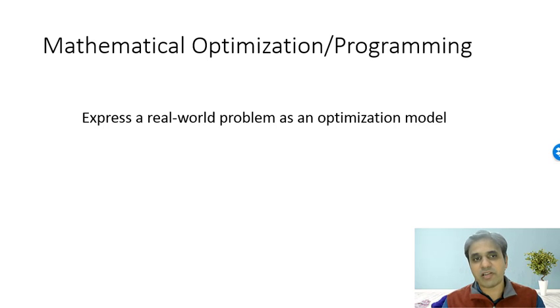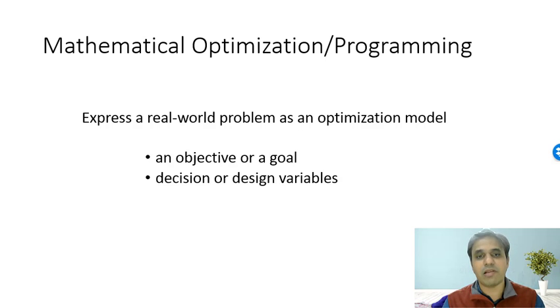The essential idea of mathematical optimization is that you need to express a real world problem as an optimization model. An optimization model contains an objective or a goal which you want to achieve. Then there are certain decision variables or design variables which you have control over. And there are certain constraints or restrictions which are imposed on these design variables.